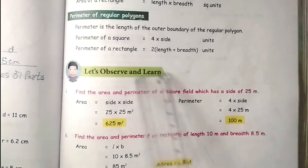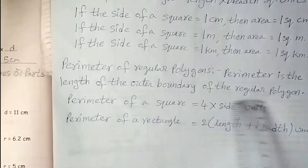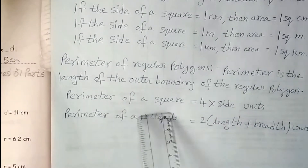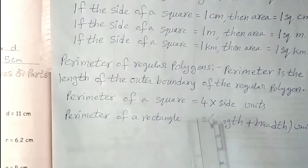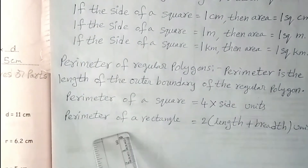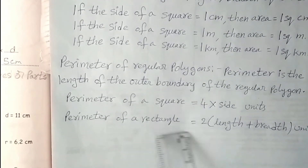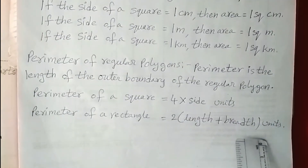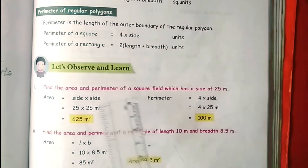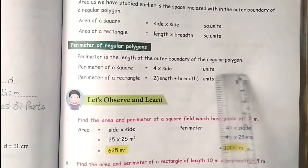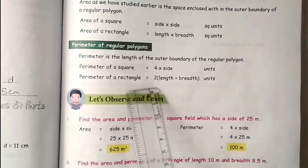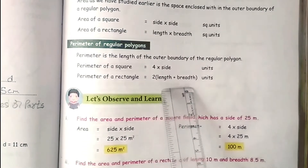Coming to the perimeter of a regular polygon — perimeter is the length of the outer boundary of the regular polygon. Perimeter of a square equals 4 into side units, because all 4 sides of a square are equal. Perimeter of a rectangle equals 2 into length plus breadth units. These formulas are also given in the textbook.